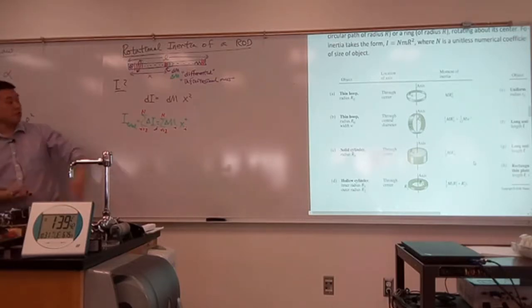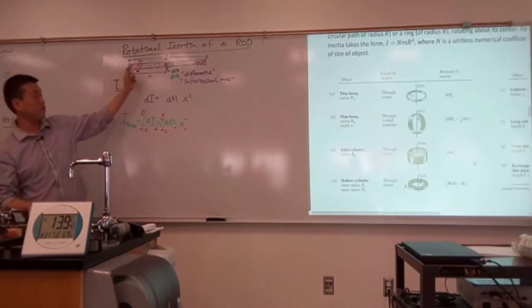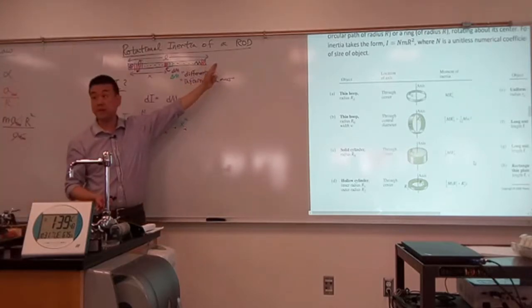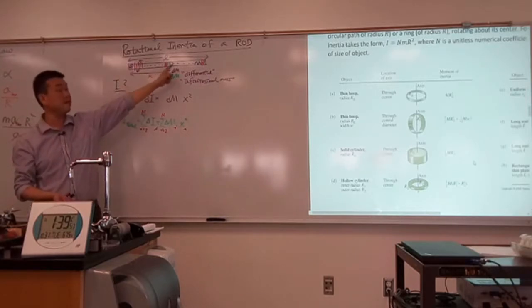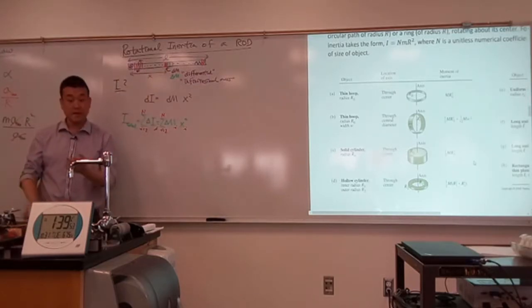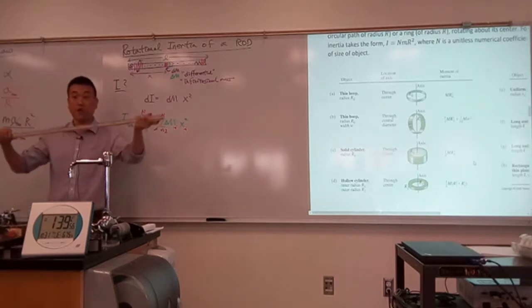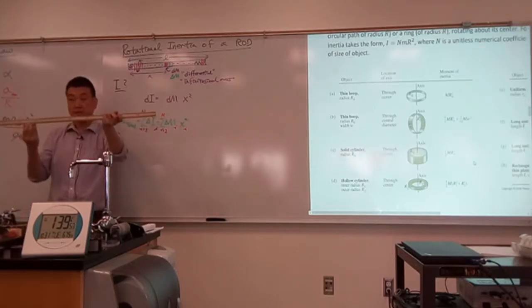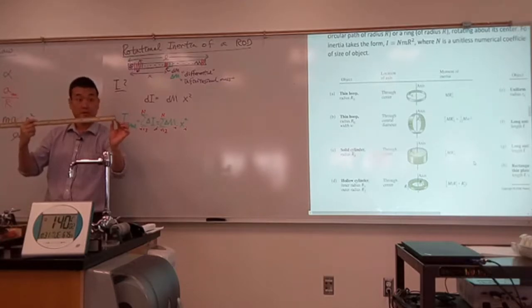This would be an approximation of what the rotational inertia of the whole thing is. Each little piece here is still not a point mass. Even when you break this down into 100 one-centimeter pieces, each one-centimeter piece has an extent of one centimeter — it's still not a point mass.